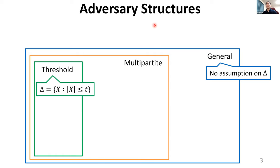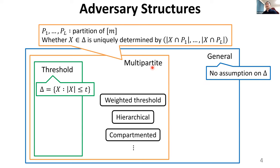In this work, we consider three kinds of adversary structures. The simplest case is the threshold adversary structure, which tolerates any coalition of at most T servers. The most general case is a general adversary structure, which has no limitation on the adversary structure delta. A multipartite adversary structure lies between threshold and general adversary structures. Specifically, suppose that a subset of M servers is partitioned into L parts, P1 to PL. In a multipartite adversary structure, whether a subset X is in delta or not is uniquely determined by the vector which counts the number of servers in each part. Multipartite adversary structures include various kinds of non-threshold adversary structures, such as weighted threshold, hierarchical and compartmented adversary structures.